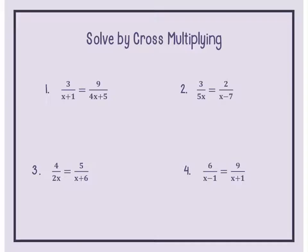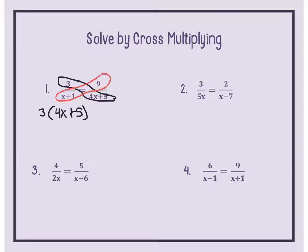Now, solving by cross-multiplying. If one fraction equals another fraction, we cross-multiply — these terms get multiplied diagonally, basically bringing up our denominators. On the left I have 3 times 4x plus 5, and on the right 9 times x plus 1. Distributing the 3 gives 12x plus 15, and distributing the 9 gives 9x plus 9.